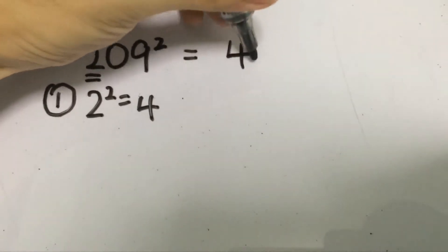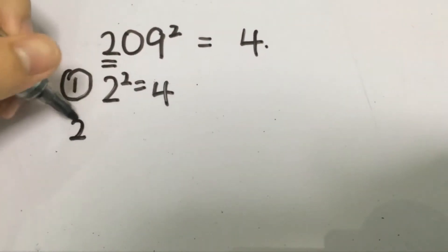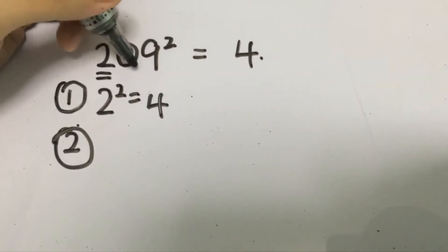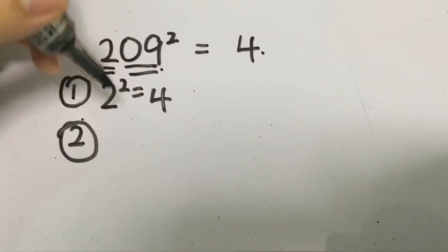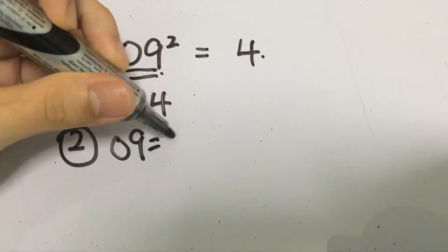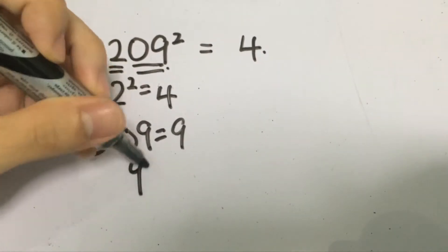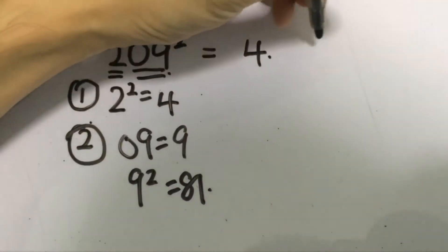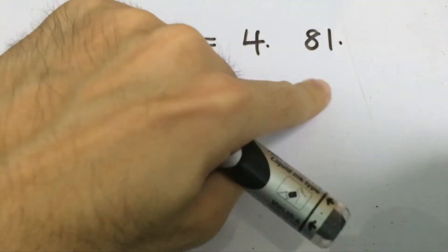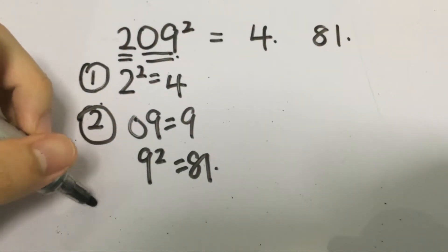And after that what we'll do is that we take the last two digits itself in this case is 09, the same as 9, and we square it. So 9 squared gives you 81 and that will be put at the last two values.